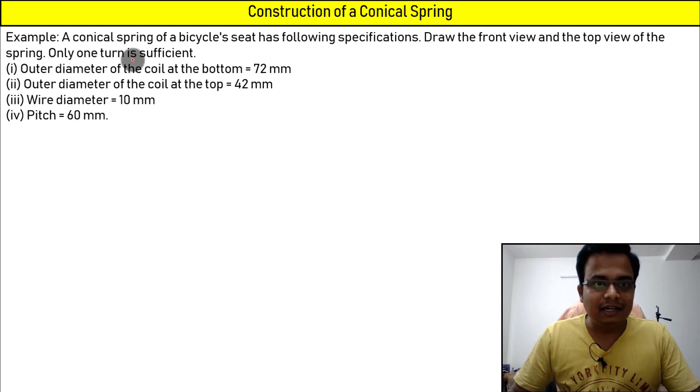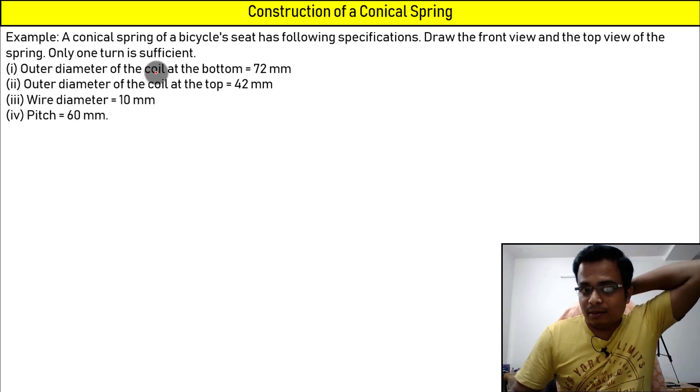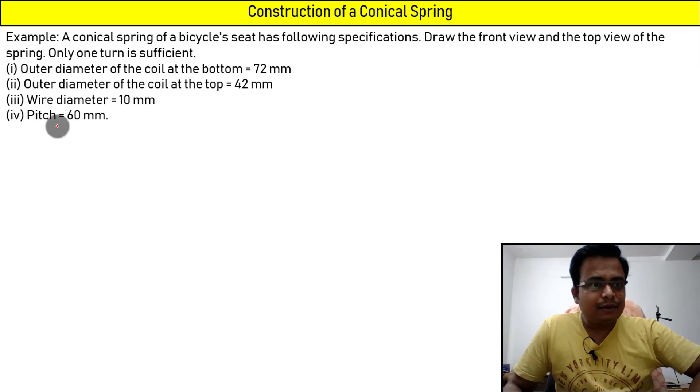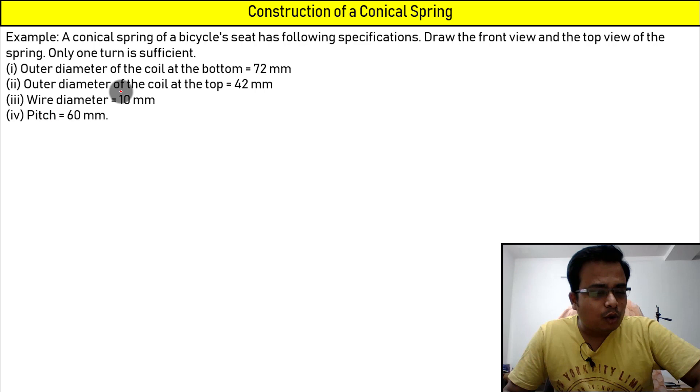By the way, this problem has been taken from Engineering Drawing by N.D. Bhatt. It's an excellent book. If you are a mechanical or a civil engineer, you should definitely purchase this. Now the outer diameter of the coil at the bottom is 72, and outer diameter of the coil at the top is 42.